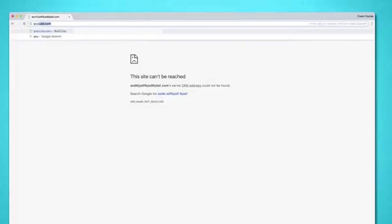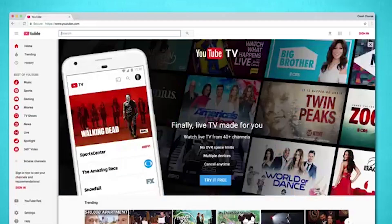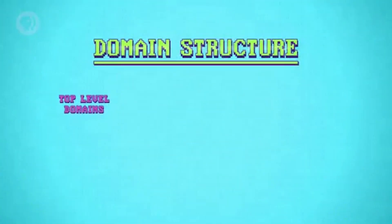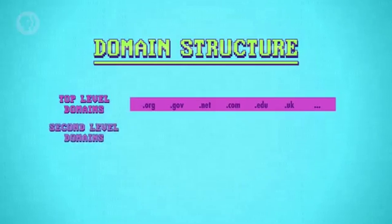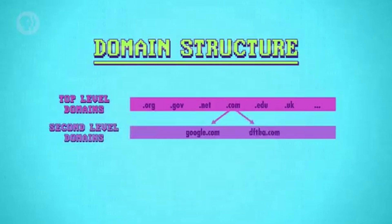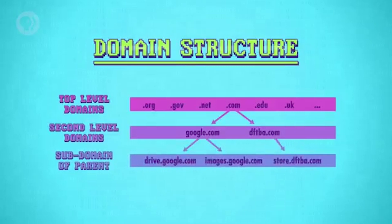But if DNS returns a valid address, which it should for youtube.com, then your browser shoots off a request over TCP for the website's data. There are over 300 million registered domain names, so to make DNS lookups more manageable, it's not stored as one gigantically long list, but rather in a tree data structure. What are called top-level domains, or TLDs, are at the very top — huge categories like .com and .gov. Then there are lower-level domains called second-level domains, such as google.com and dftba.com. Then there are even lower-level domains called subdomains, like images.google.com and store.dftba.com.